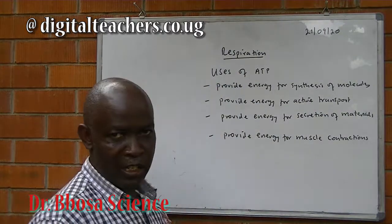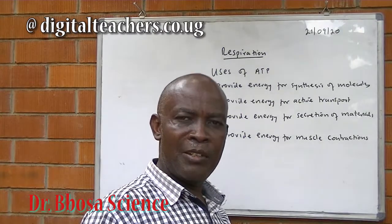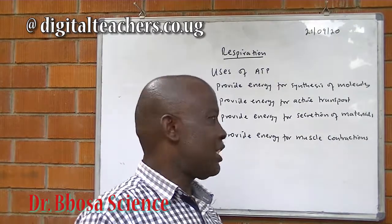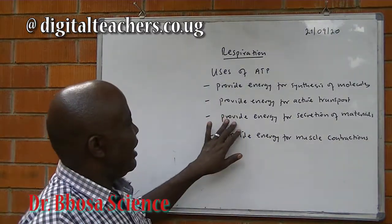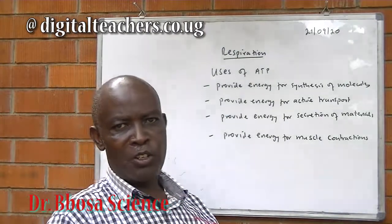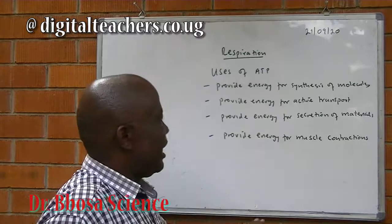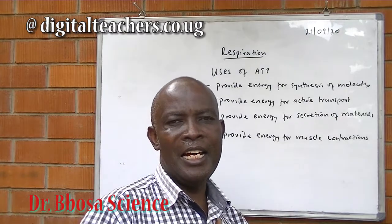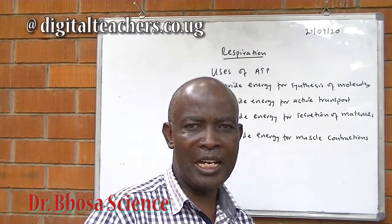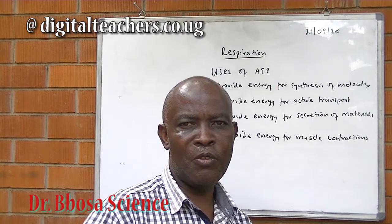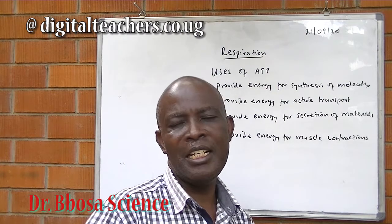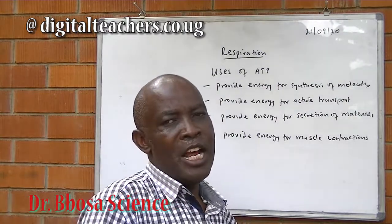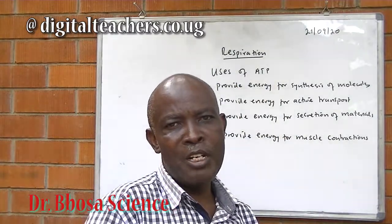ATP provides energy for active transport. Active transport is the movement of particles against the concentration gradient into the cell. It provides energy for circulation, for example for circulation of digestive enzymes. It also provides energy for muscle contraction, for example contraction of the muscles in the lungs during breathing in and breathing out, and contraction of the heart. All energy required by the body is obtained in the form of ATP.